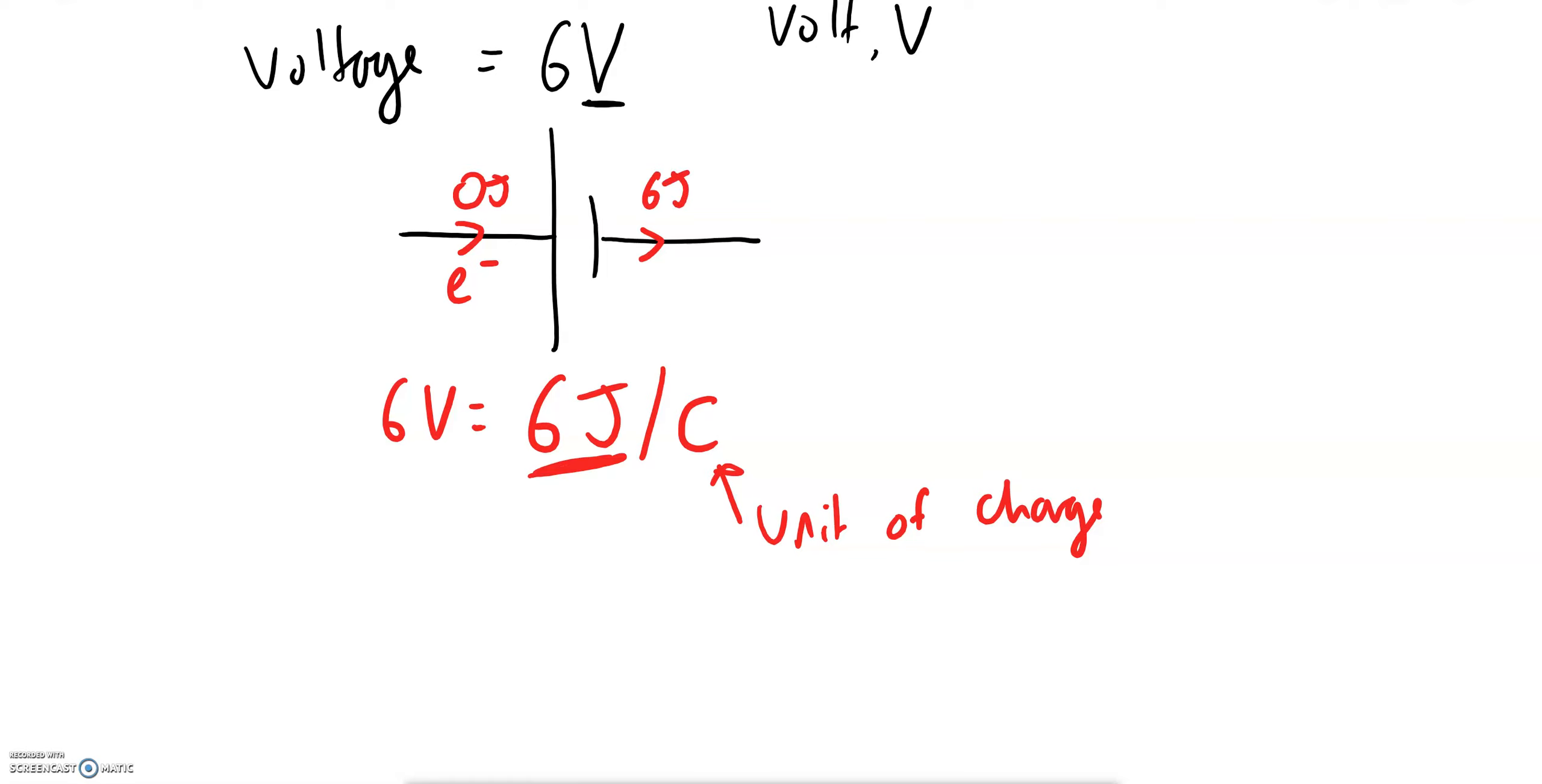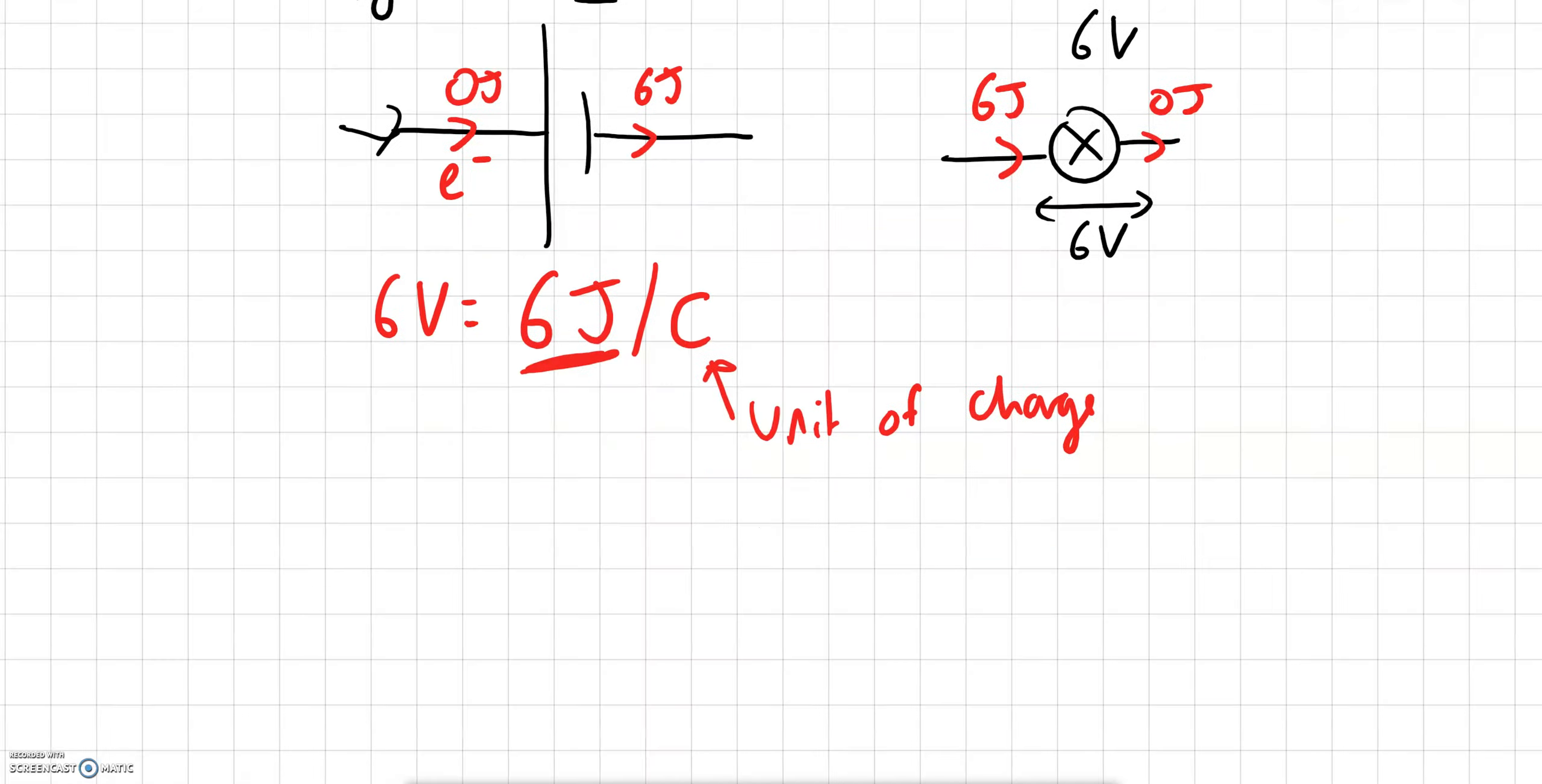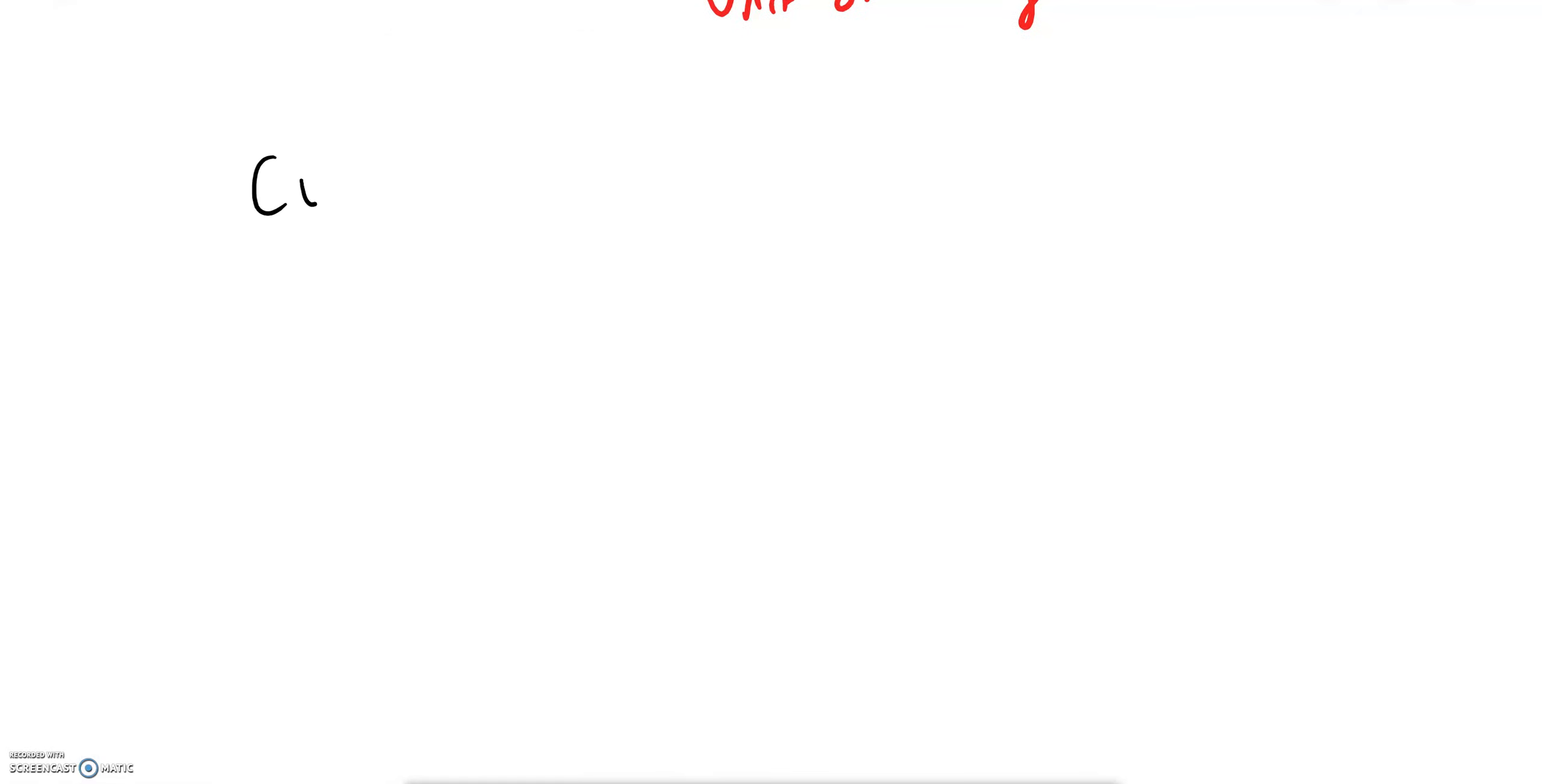They'll then travel around the circuit and when they reach a bulb like this, that's a symbol for a bulb. Say it's a six volt bulb, we know that bulbs use up energy, they don't give energy like batteries. So they'll go in this side with their six joules and they'll leave zero joules. So we say that there's a potential difference or voltage of six volts. It's the amount of energy they lose and then they return back to the battery and come back in here to get more energy.